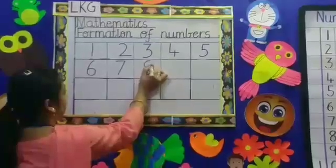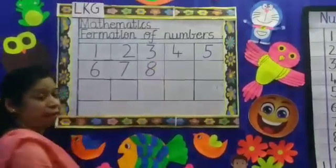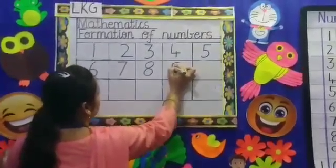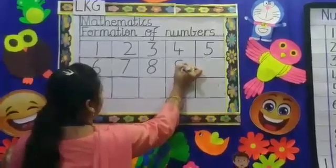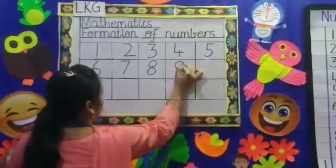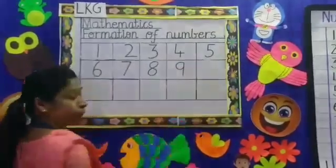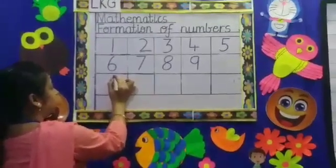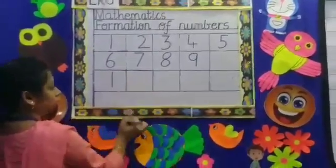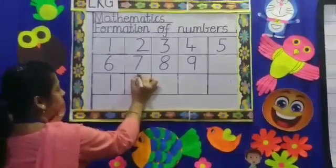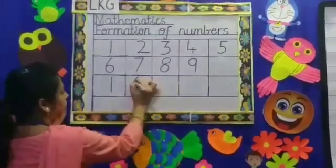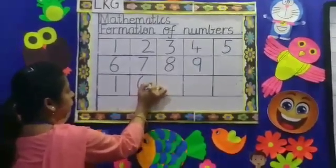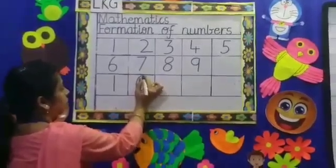Number 8: you start from the top, come right down like this, turn, and then go up — number 8. Number 9: you make a round, go up, come down the same line — number 9. Number 0: you start from the top, come right down, turn, and go on top again — 0.